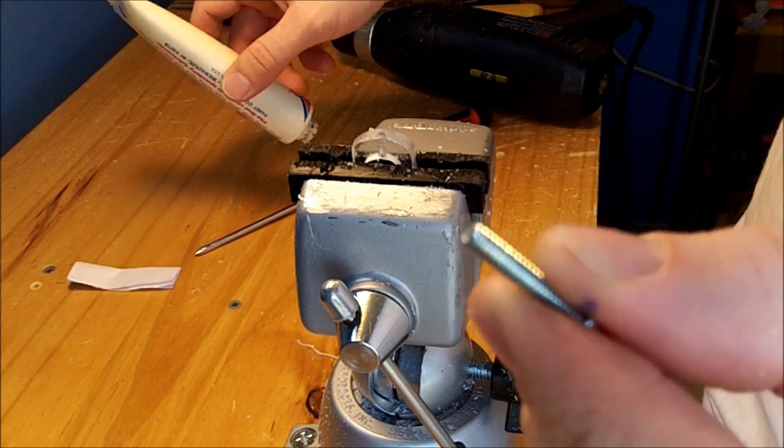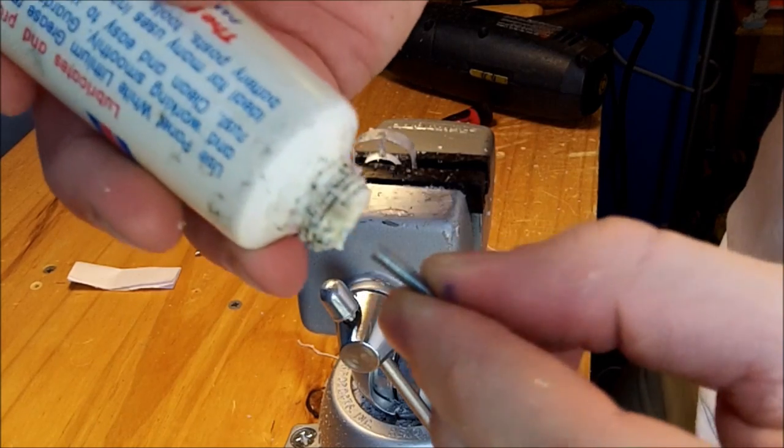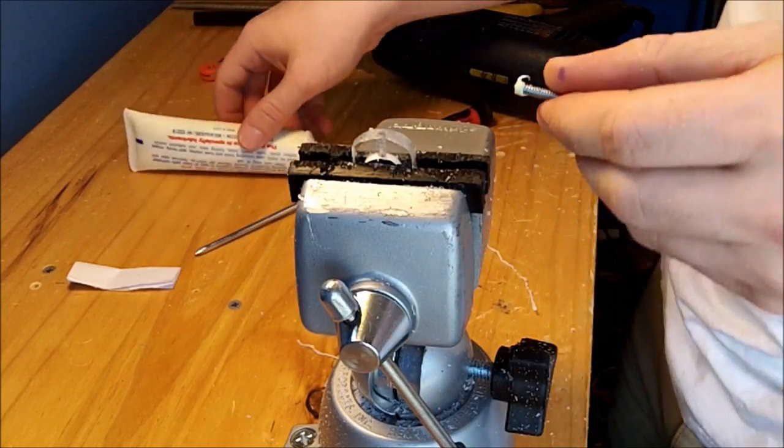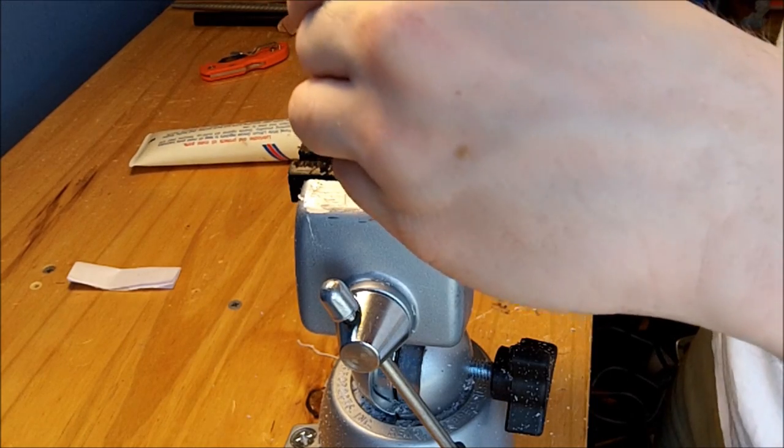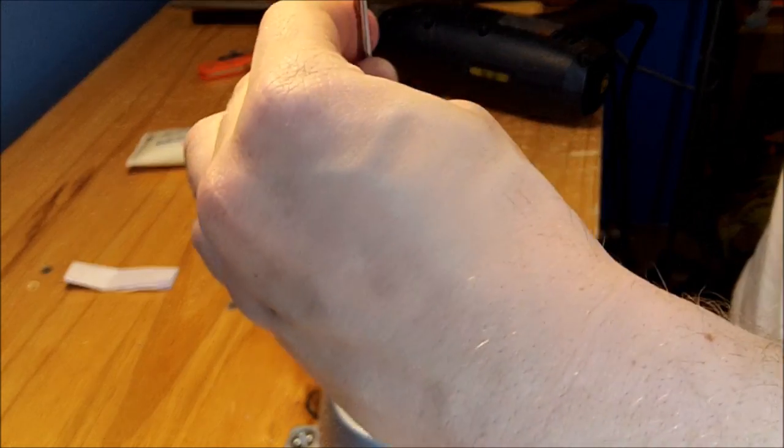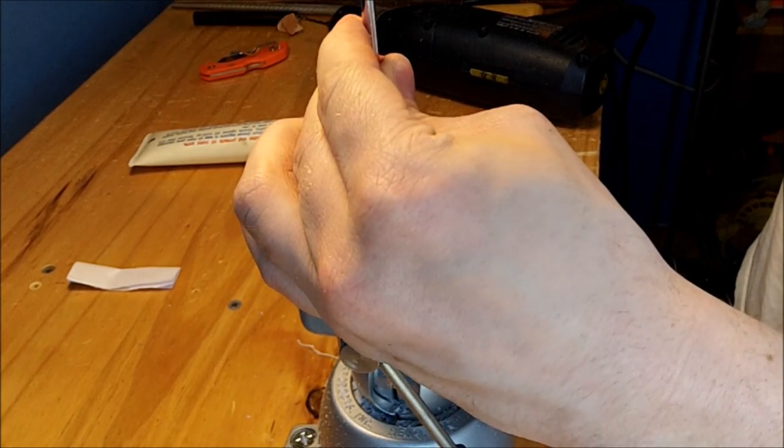Next, take an additional 6-32 screw, put a little lithium grease on it, and use the same tapping technique to create threads in this piece of polycarbonate.